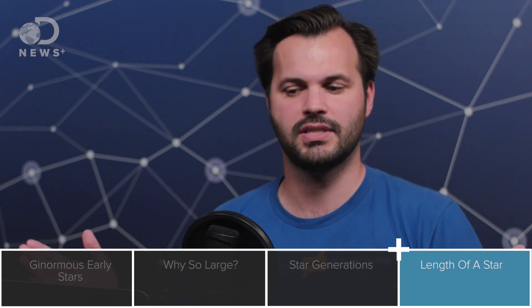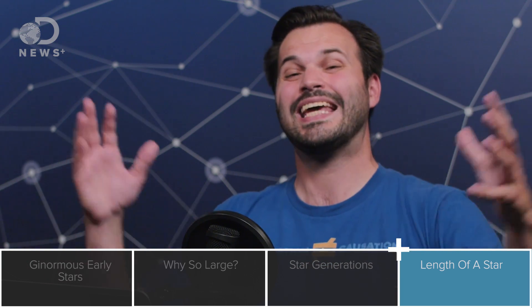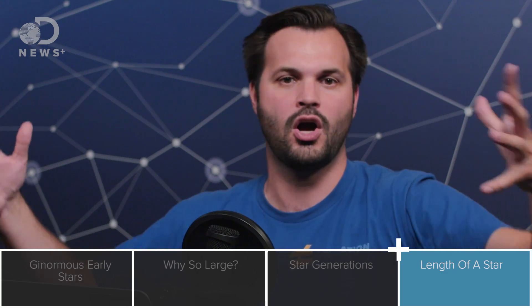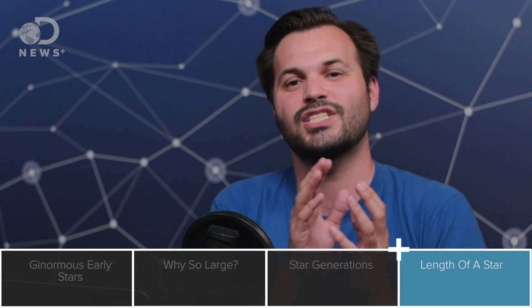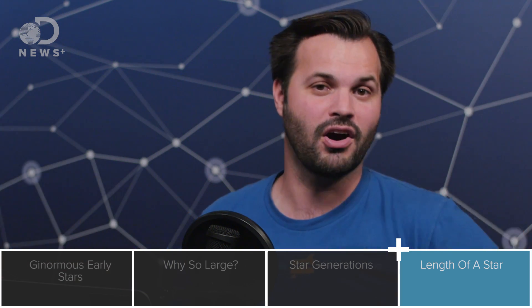Our star is going to last about 10 billion years. But a star 10 times the size of our sun wouldn't last 10 times as long because it's bigger. It would actually only last around 20 million years, a really short amount of time. The bigger they are, the harder they fall.